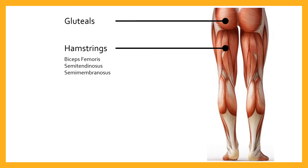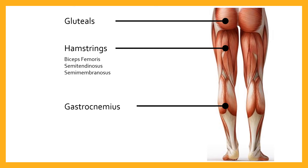The other two hamstring muscles are the semitendinosus and the semimembranosus. As you look at the diagram, on the lateral side we've got the semitendinosus, centrally we've got the biceps femoris, and closest to the midline we've got the semimembranosus. Moving down to the calf, there are two main muscles: the gastrocnemius — a two-headed muscle on top — and underneath it a longer, flatter muscle called the soleus.